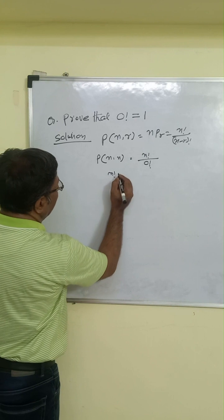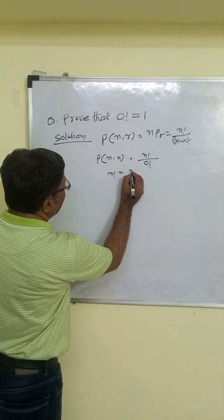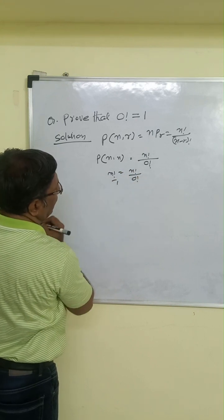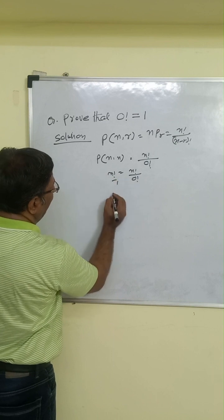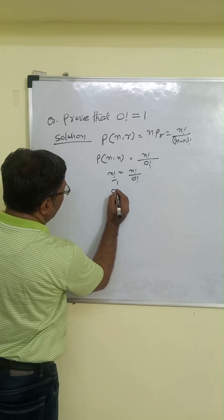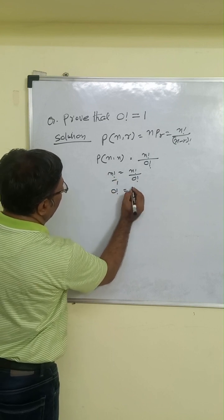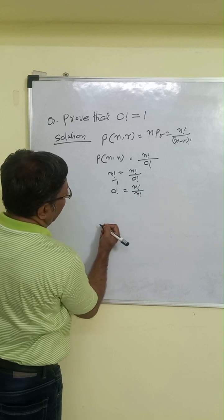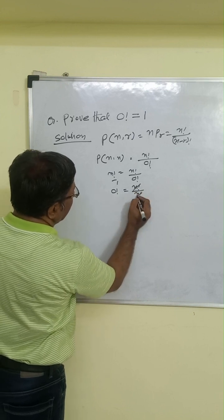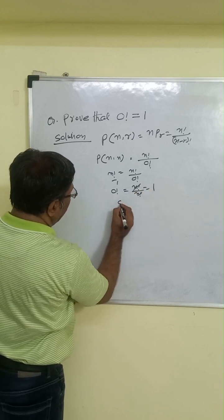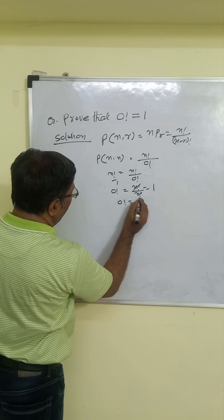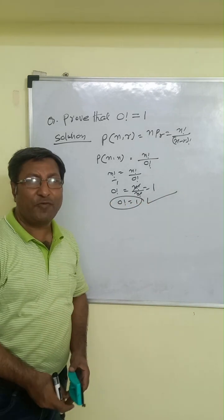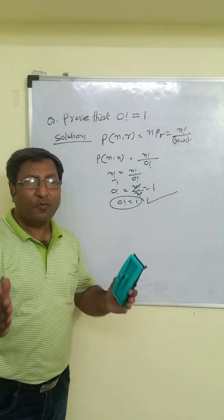We also know that the permutation of n objects taken n at a time equals n factorial. So we have n factorial equals n factorial divided by 0 factorial, which gives 0 factorial equals n factorial divided by n factorial, which equals 1. Therefore, it is proved that 0 factorial equals 1.